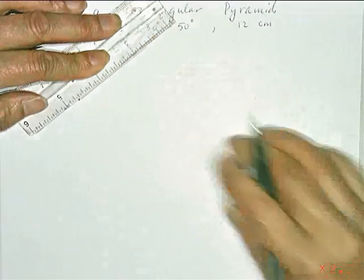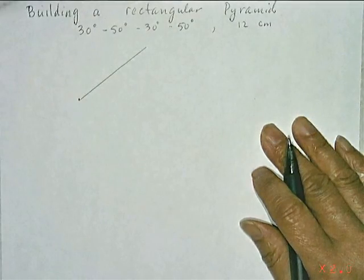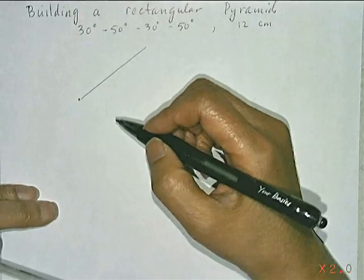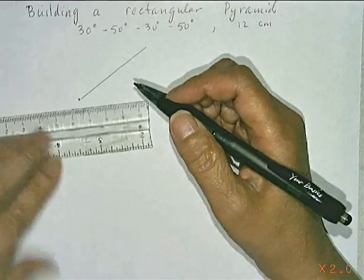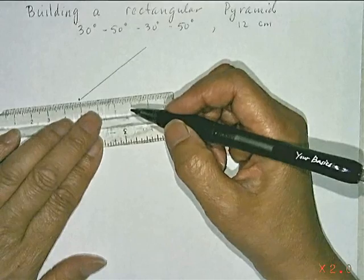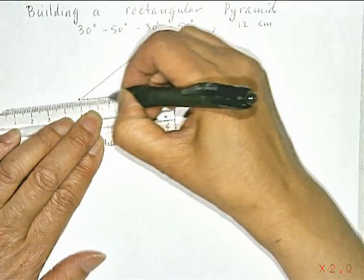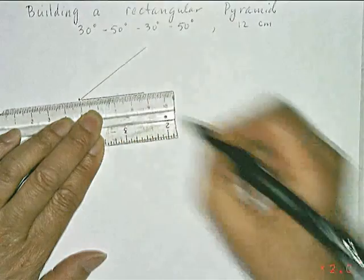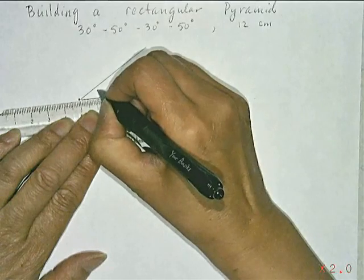Now I don't exactly have a protractor here but you're going to use a protractor and you're going to draw a 30 degree angle. So that's your 30 degree angle.